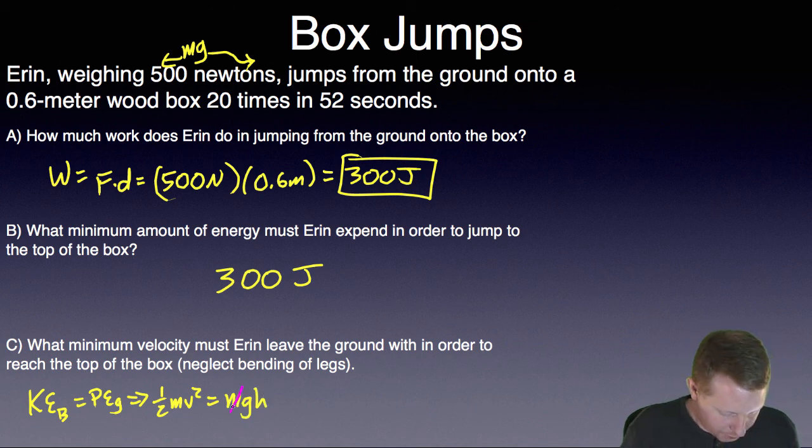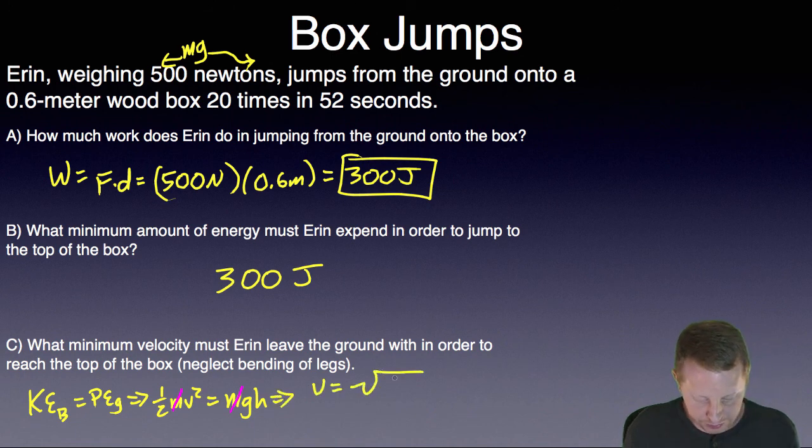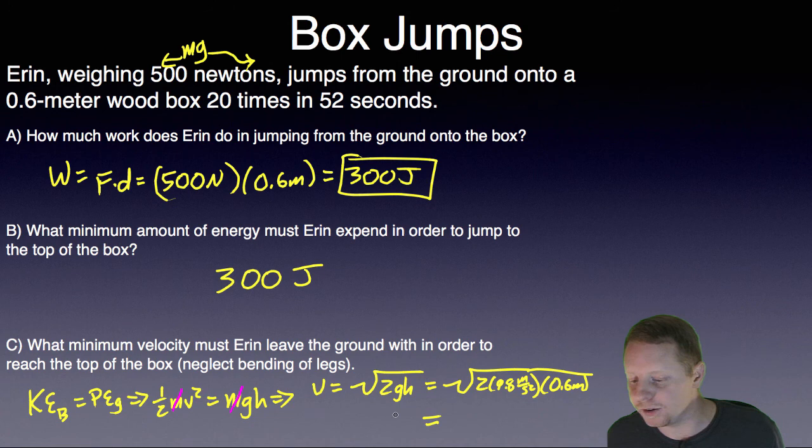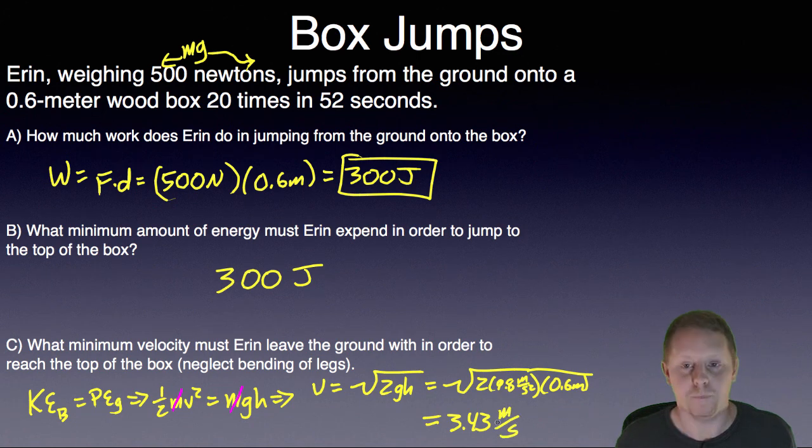Again, our masses are going to make a ratio of 1, and if we solve this for velocity, we find that velocity is equal to the square root of 2gh again, which is the square root of 2 times 9.8 meters per second squared times the height, 0.6 meters, or a velocity of right around 3.43 meters per second.